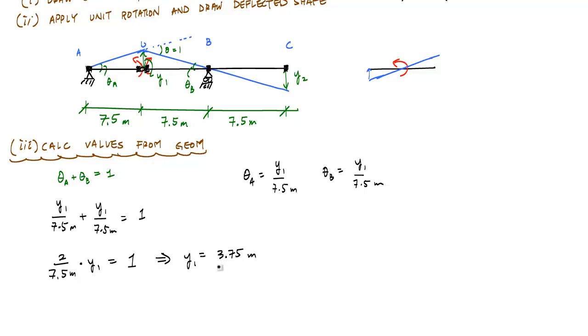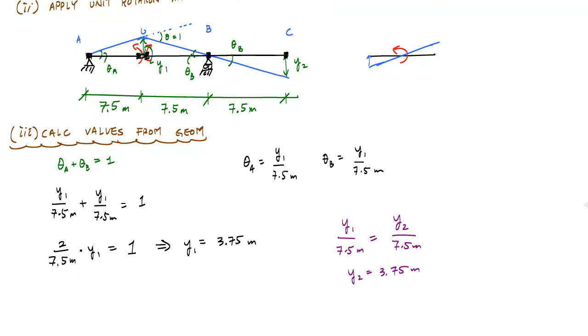And then using this information, I can calculate Y2 really based on similar triangles because this angle here is also theta B. And so by similar triangles, I can say that Y1 over 7.5 meters is equal to Y2 over 7.5 meters, which tells me that Y1 equals Y2 and Y2 is also 3.75 meters.